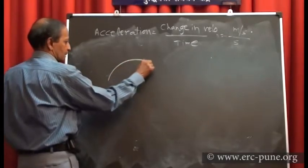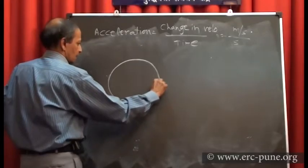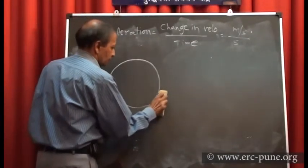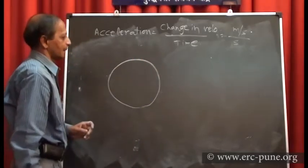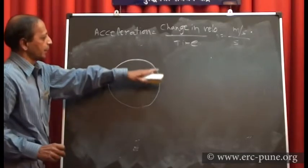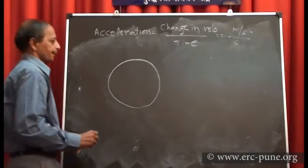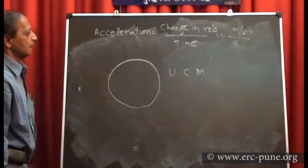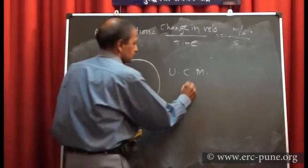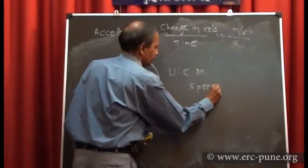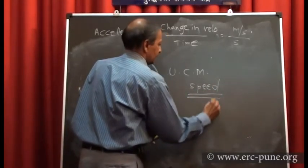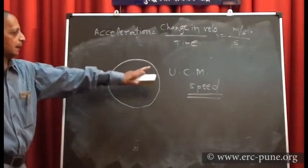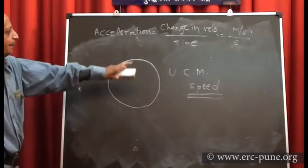Acceleration is the change in velocity upon time, with units of m/s². Now I want to discuss another type of motion: uniform circular motion. In uniform circular motion, the body moves along the circumference of a circle with constant speed. I use the word 'speed' and not 'velocity' deliberately.